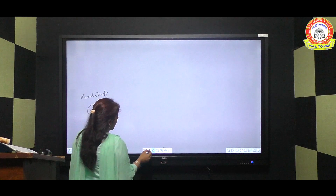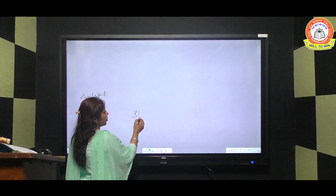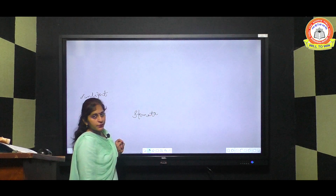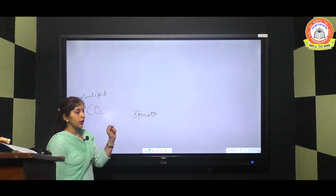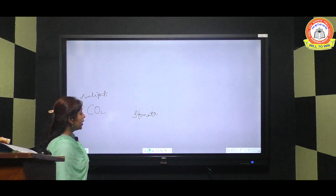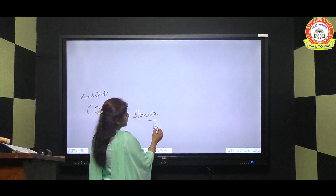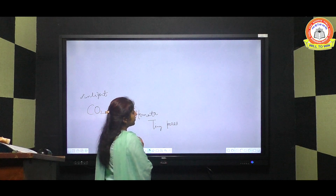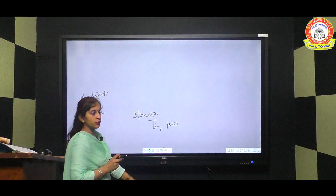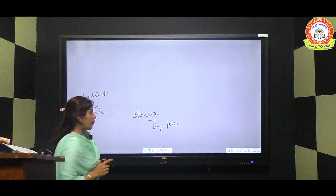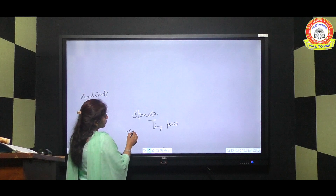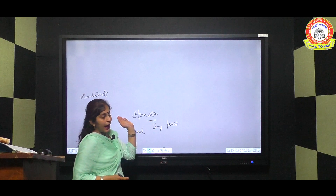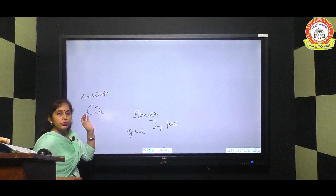Carbon dioxide enters through small openings on the surface of the leaves called stomata. These are extremely tiny pores on the surface of leaves that can be seen only with a microscope. Stomata are protected by guard cells. Carbon dioxide enters through stomata, and oxygen also comes out through stomata.